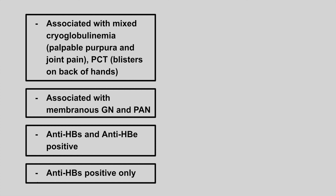Hepatitis C is associated with mixed cryoglobulinemia, where you get palpable purpura and joint pain, and also porphyria cutanea tarda, where you get blisters on the back of the hands. Hepatitis B is associated with membranous glomerulonephritis causing a nephrotic presentation, and also polyarteritis nodosa, where you get abdominal pain and microaneurysms in the kidneys.